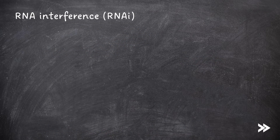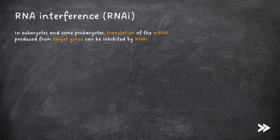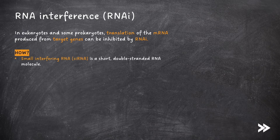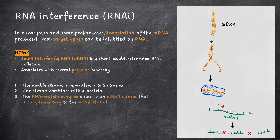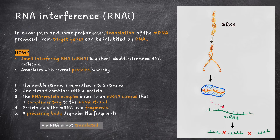Then we also have RNA interference, which can also be abbreviated to RNAi, with a lowercase i. In eukaryotes and some prokaryotes, translation of the mRNA produced from target genes can be inhibited by RNAi. Small interfering RNA, siRNA in short, is a short, double-stranded RNA molecule. This siRNA associates with several proteins, whereby first the double-strand is separated into two strands, and then one strand combines with a protein. Next, the RNA-protein complex binds to an mRNA strand that is complementary to the siRNA strand. The protein cuts the mRNA into fragments, and finally a processing body degrades the fragments, meaning that the mRNA is not translated.